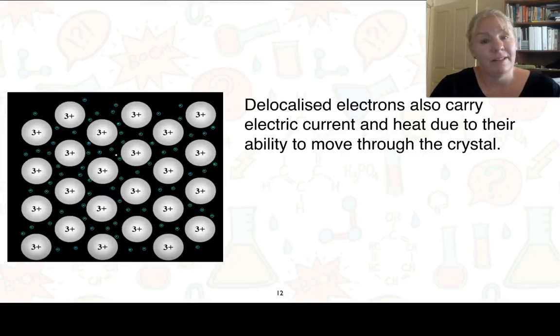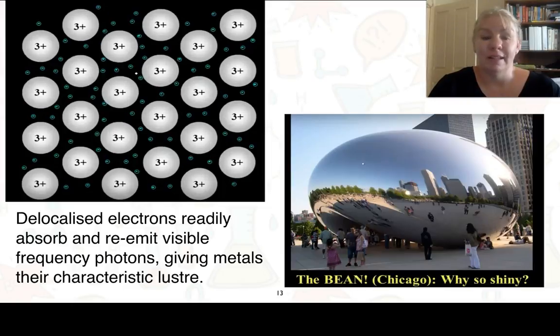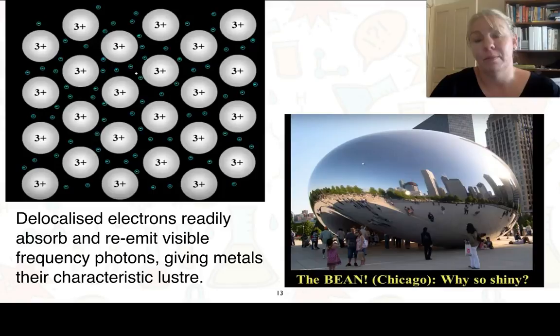The delocalised electrons can also carry the electric current and heat due to their ability to move through the crystal, and so that can explain those properties as well. Delocalised electrons also readily absorb and re-emit visible frequency photons giving metals their characteristic luster. And as you can see here in the picture in Chicago with the bean, it's extremely shiny.